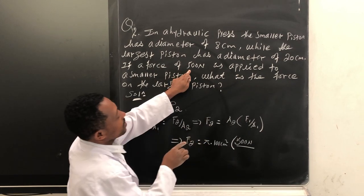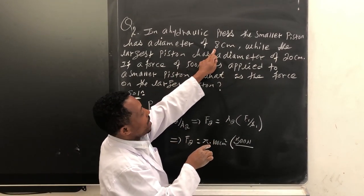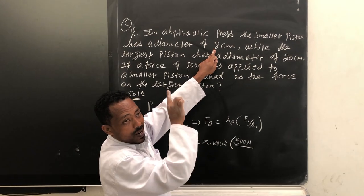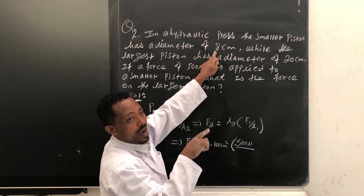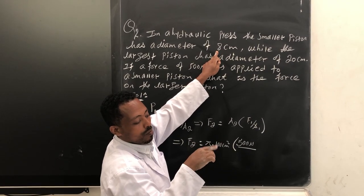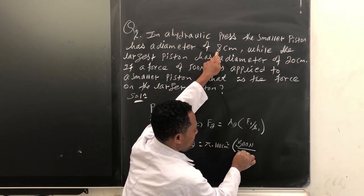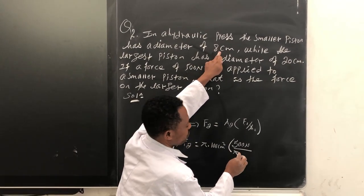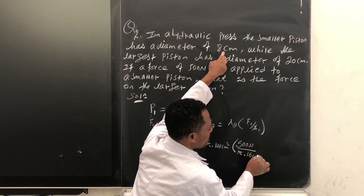Area 1 is, the diameter of piston 1 is 8 cm, just divide it to 2, it becomes 4 cm. Then area 1 is pi dot square of R1. R1 is 4, square it, 16 square cm.